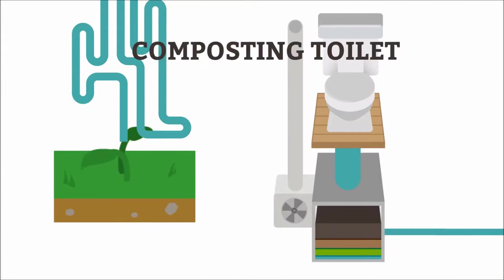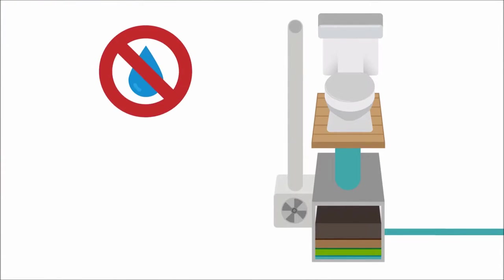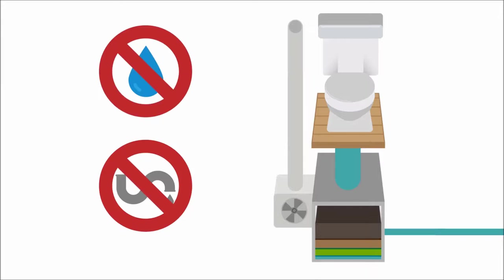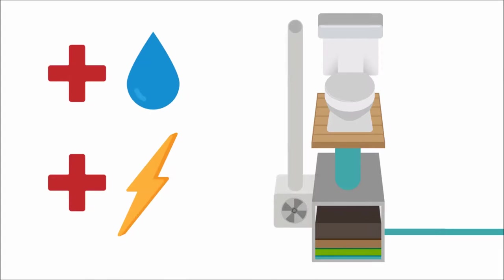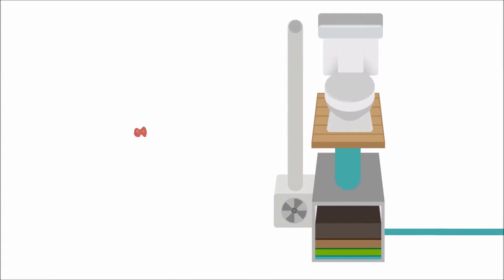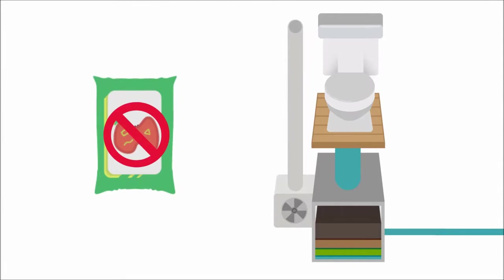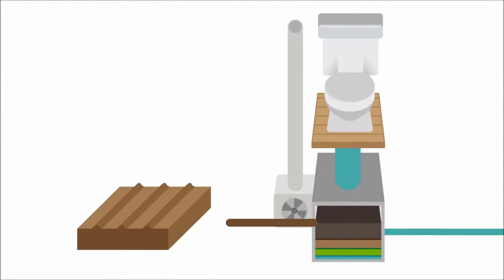A composting toilet does just this. Currently they're used where there is no water supply or sewage disposal, but if they replaced the flush system worldwide, huge amounts of energy and water would be saved. They work with aerobic bacteria that need oxygen, and you end up with fertilizer that is pathogen-free and ready to be returned to the soil.